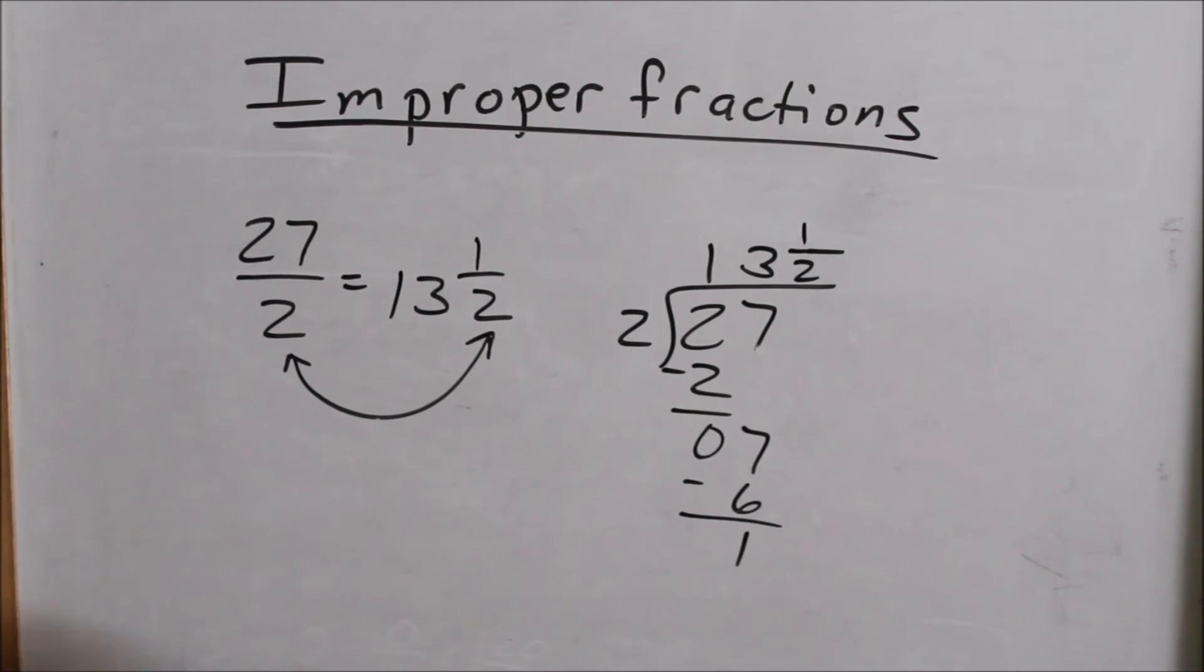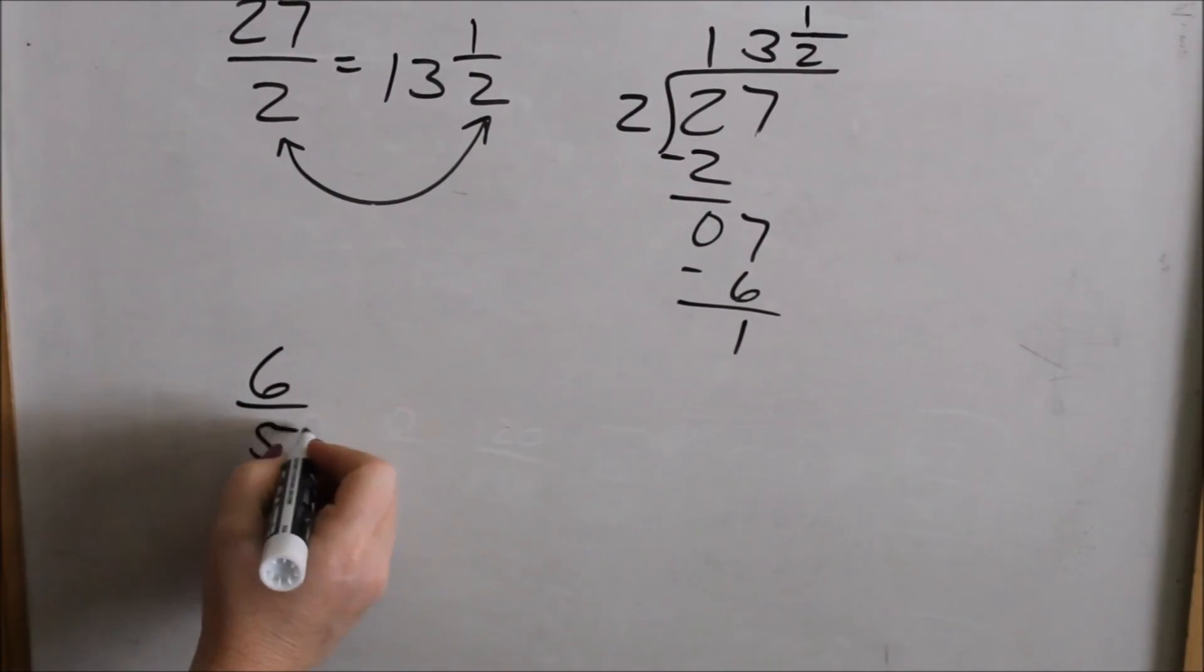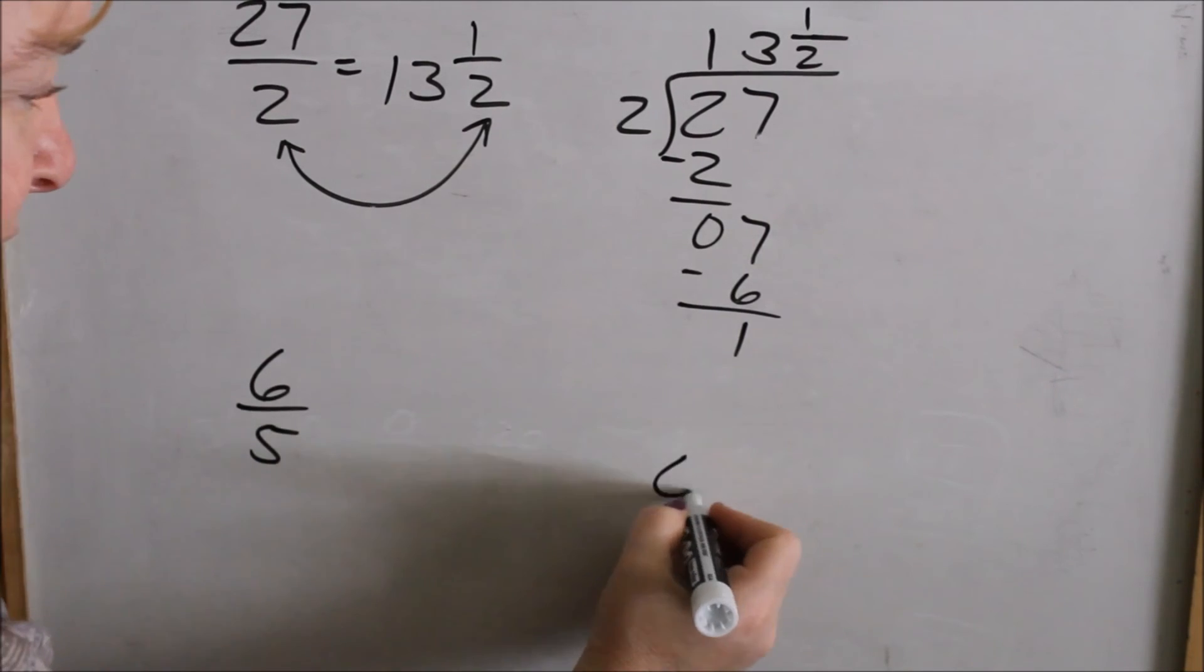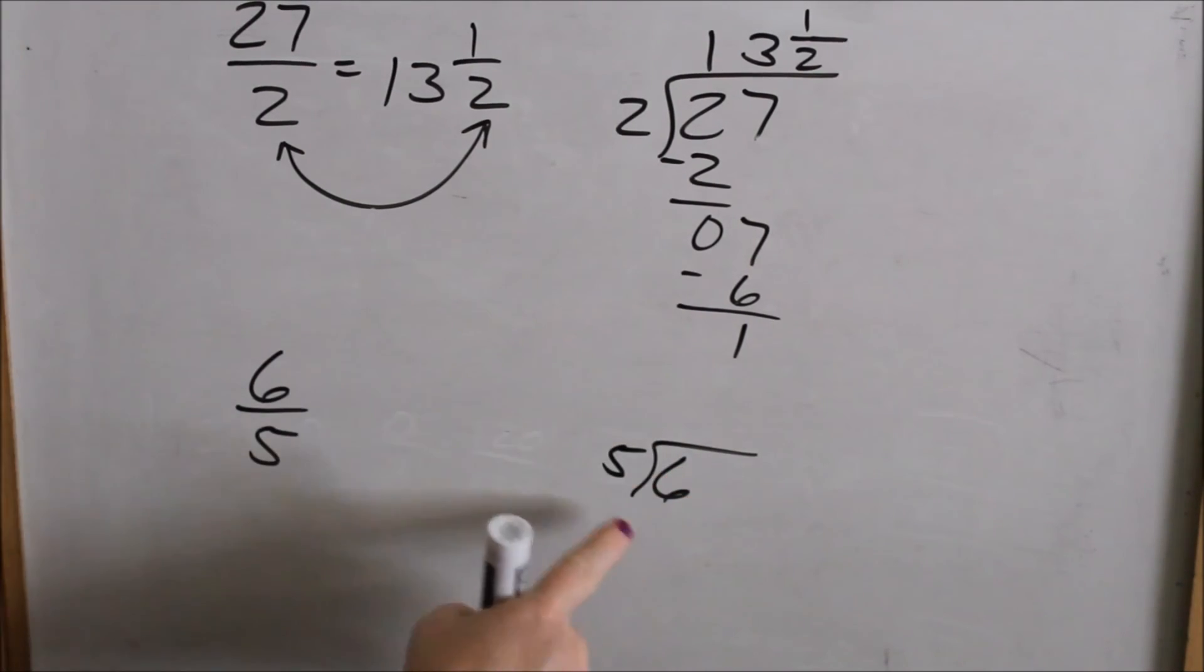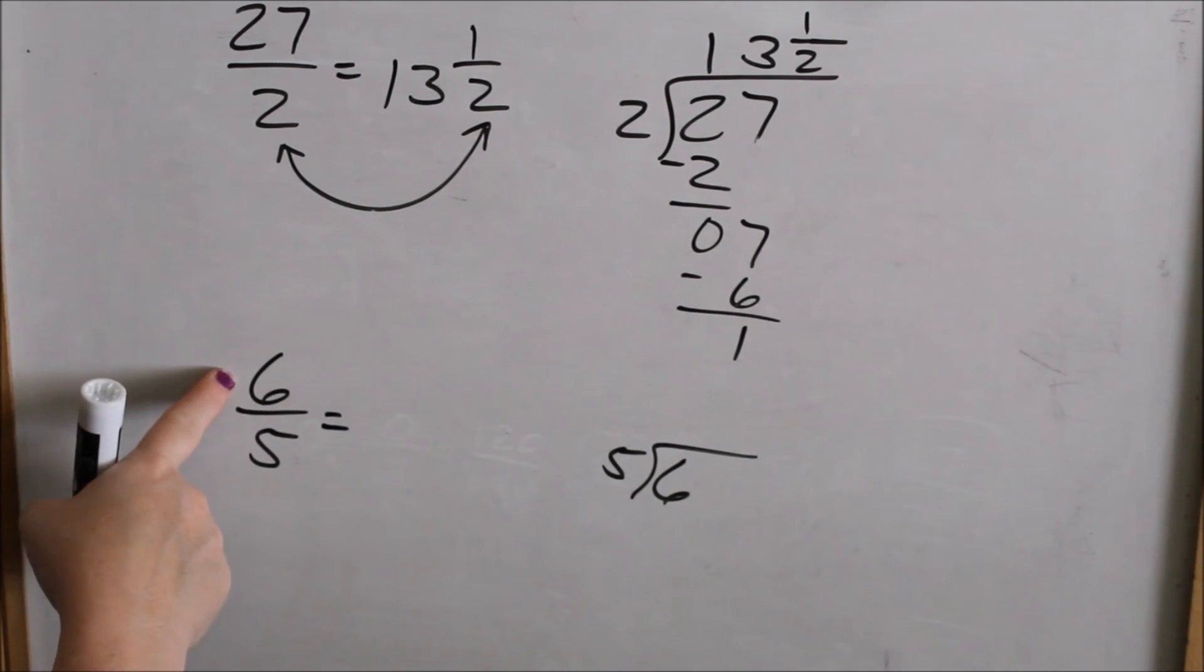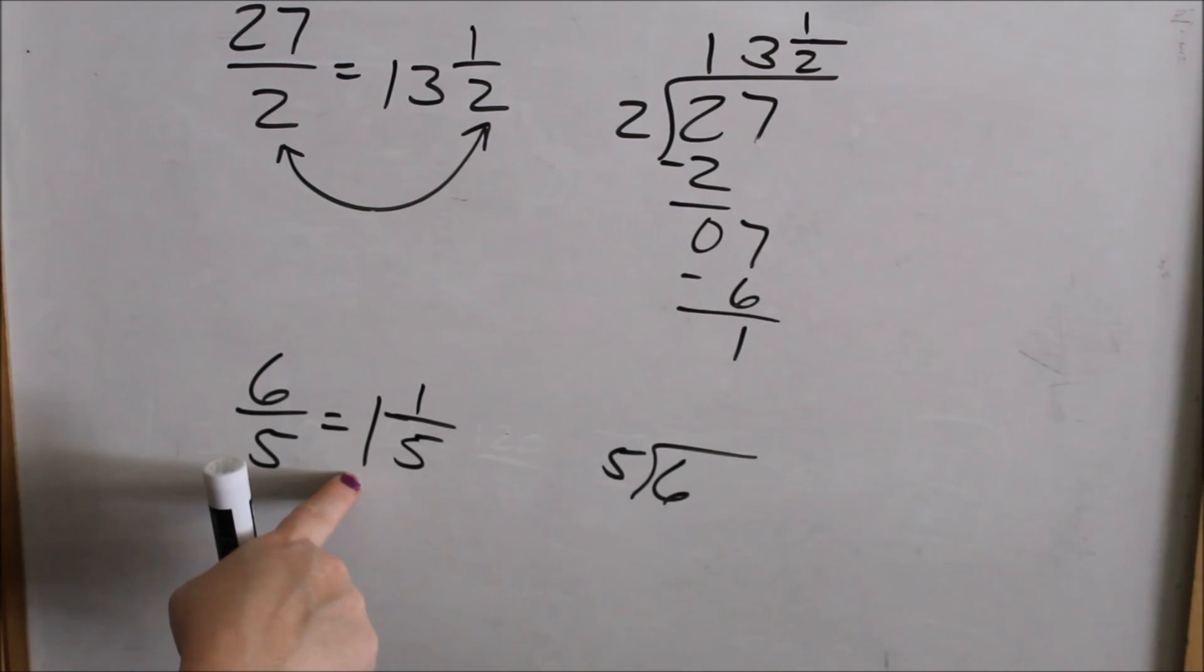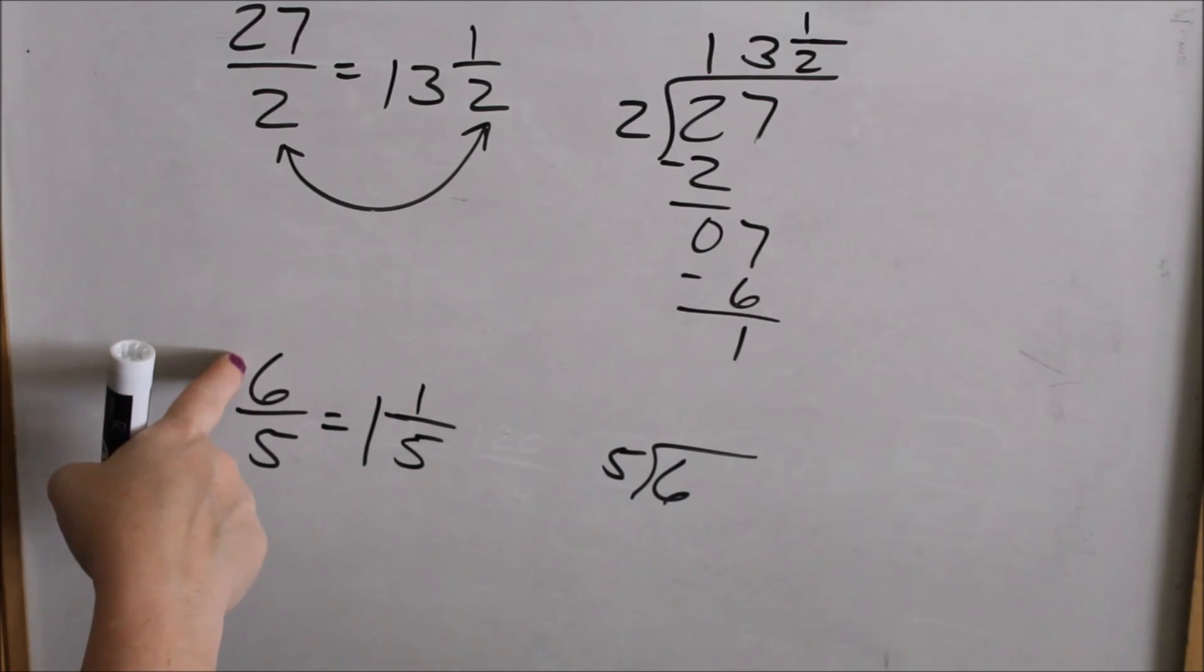Let's do just one more. If you can, you can do this in your head. 6 fifths. This is the same thing as 6 divided by 5 if you want to write it off to the side. I'm not going to write it off to the side. You can think 5 goes into 6 how many times? 1. And then the remainder is 6 minus 5 is 1. There's a remainder of 1. And you keep your same denominator. You can always turn this back into an improper fraction to check yourself. 5 times 1 is 5 plus 1 is 6. Six fifths. Make sure that these two equal each other.